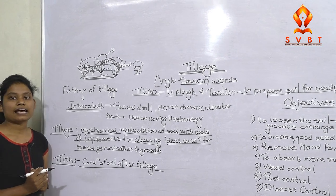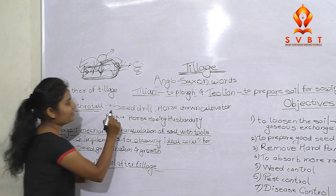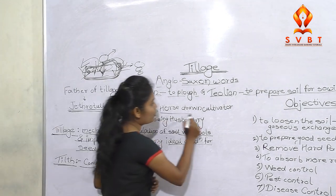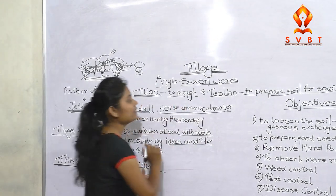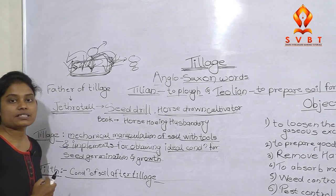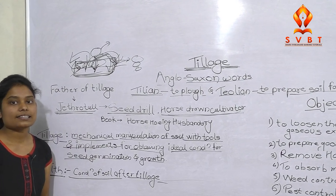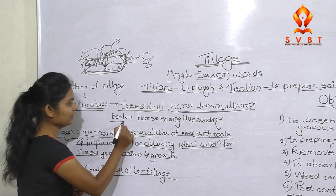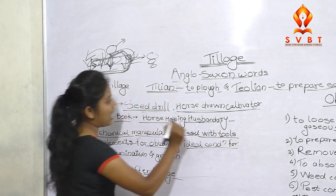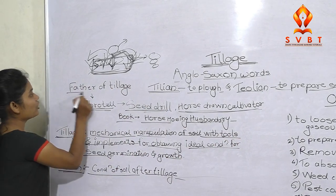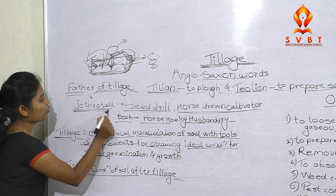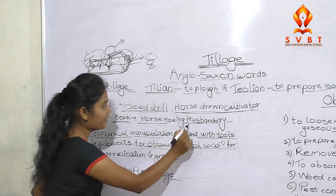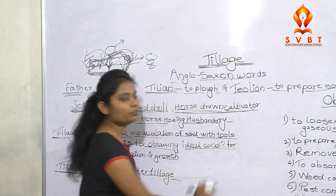There is a great study for the seed drill; we have to implement the seed drill and horse-drawn cultivator. There is a science in the tillage, so we have to study a book called Horse Hoeing Husbandry. This is the father of tillage. There is a book called Horse Hoeing Husbandry, and seed drill and horse-drawn cultivator are the two implements.